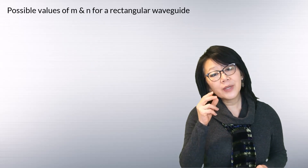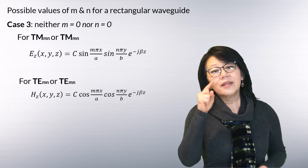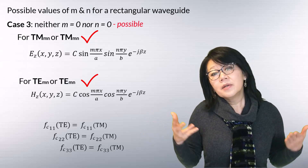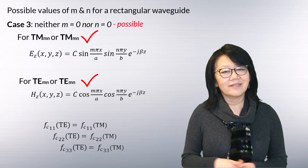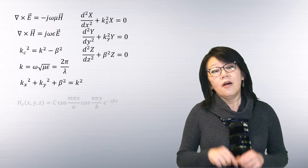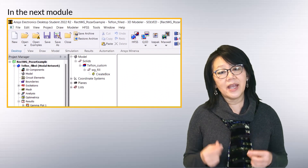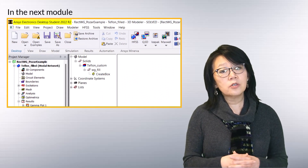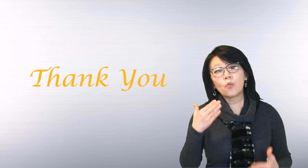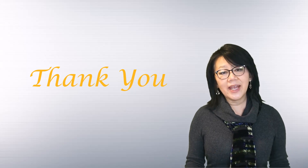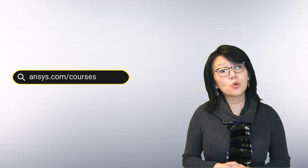In case three, both m and n are non-zero, and propagation is possible for both TE and TM modes. They share the same cutoff frequencies for a given m and n. These are the governing equations for the rectangular waveguide. In the next module we're going to simulate the rectangular waveguide in the AEDT student version using the HFSS solver. Thank you for watching this module, and to find more information on AEDT HFSS or any of the ANSYS simulation tools, please go to ansys.com/courses.